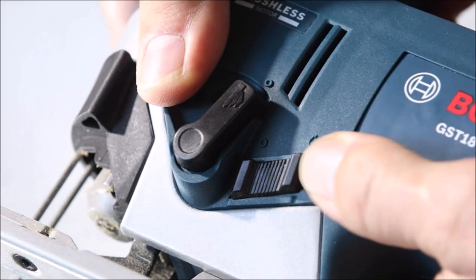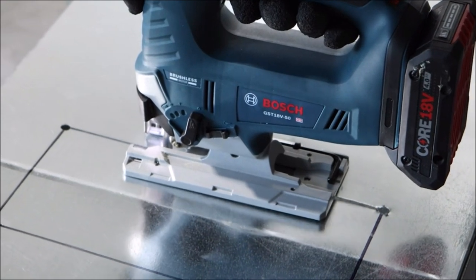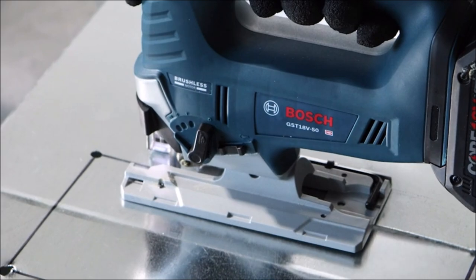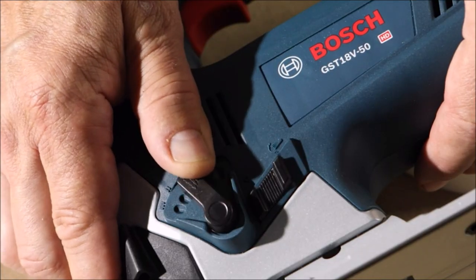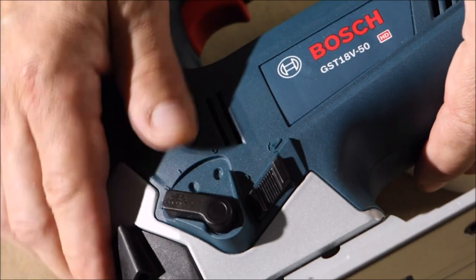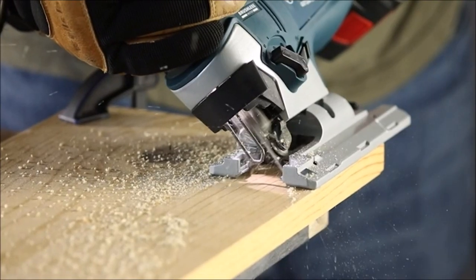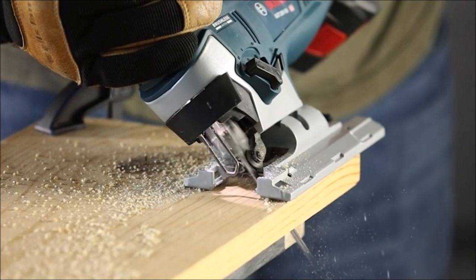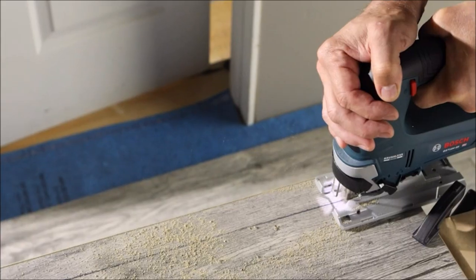This 18 volt cordless jigsaw is engineered for curved cuts, delivering strong and manageable power. The jigsaw provides corded performance with a cutting capability up to 4.9 inches in wood and zero to 3,500 strokes per minute speed. It provides a variable speed dial that allows matching the speed to material.